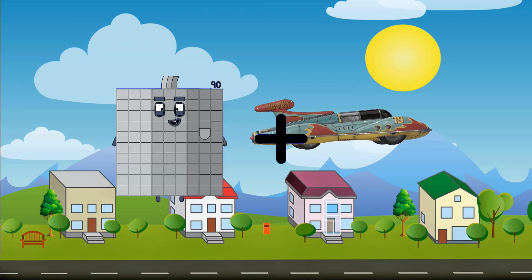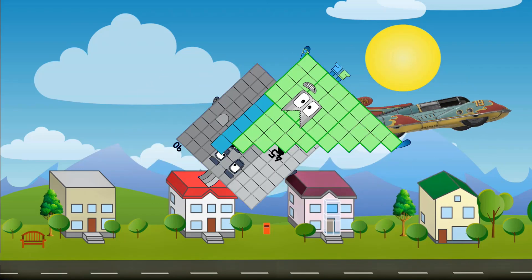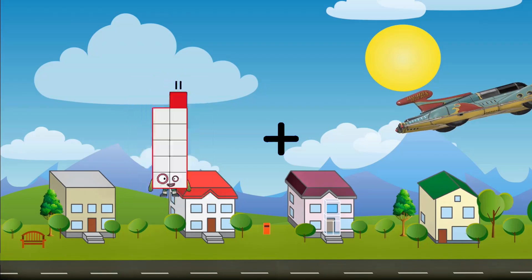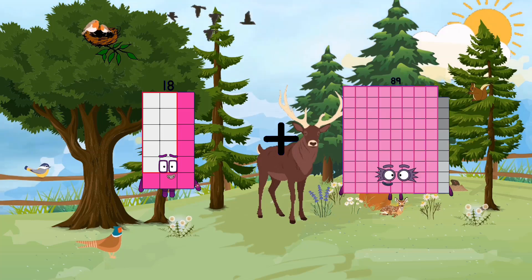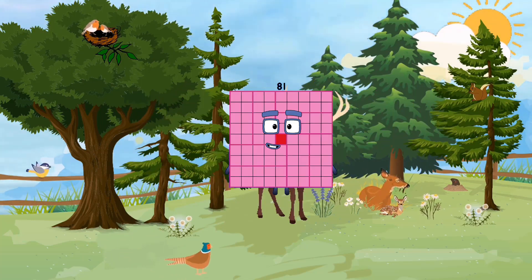90 plus 45 equals 135. 18 plus 63 equals 81.